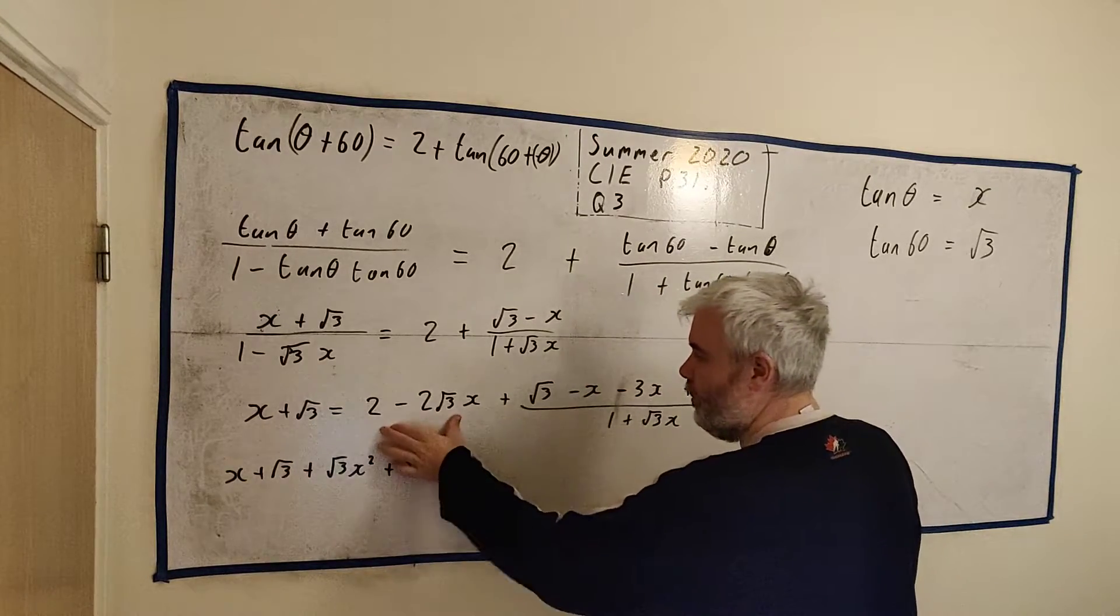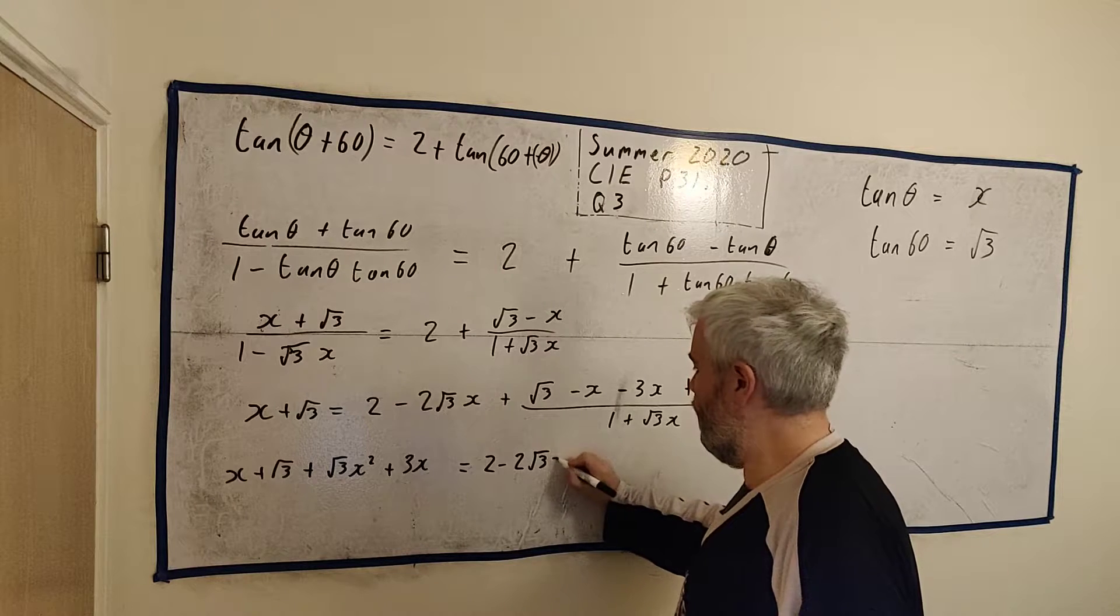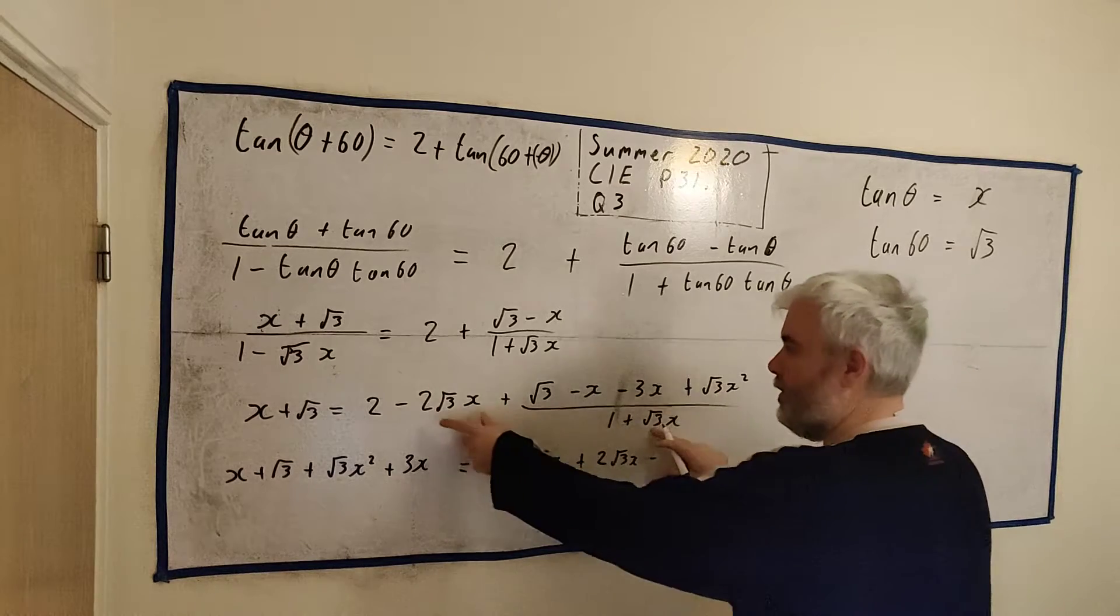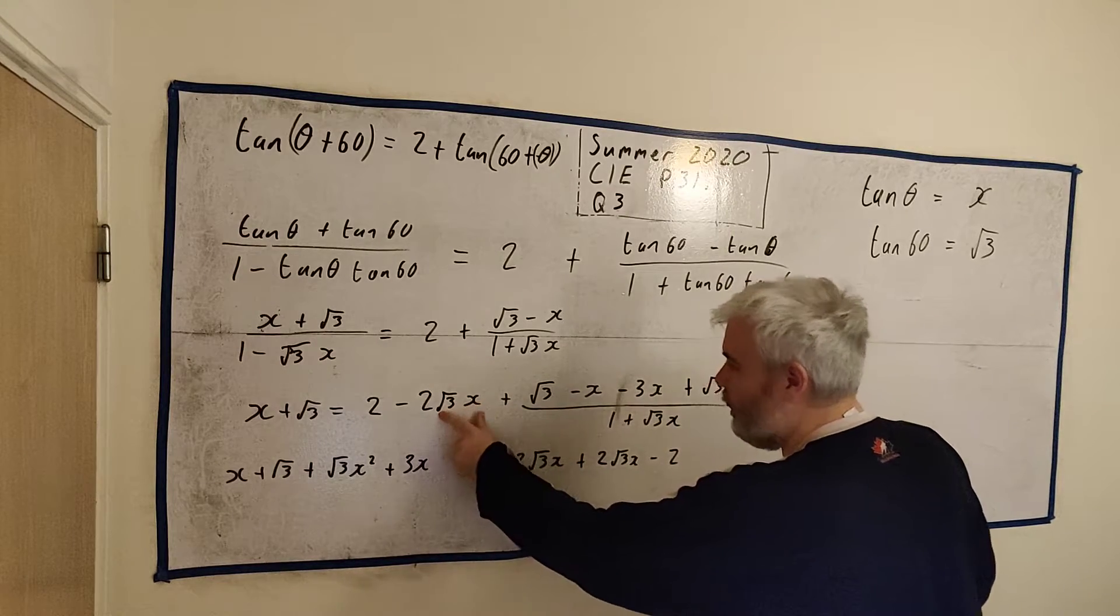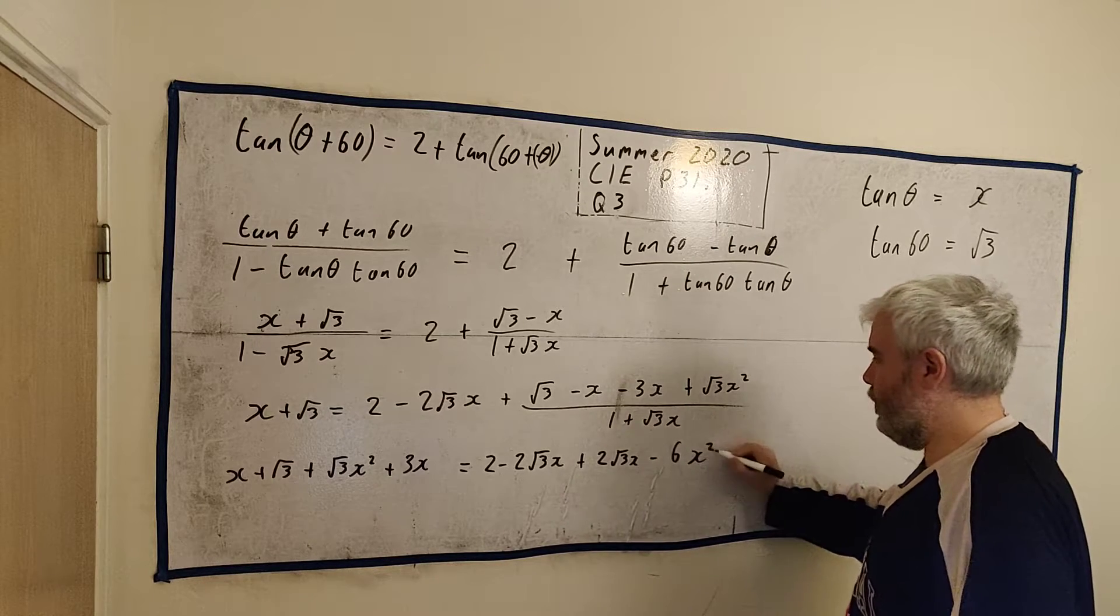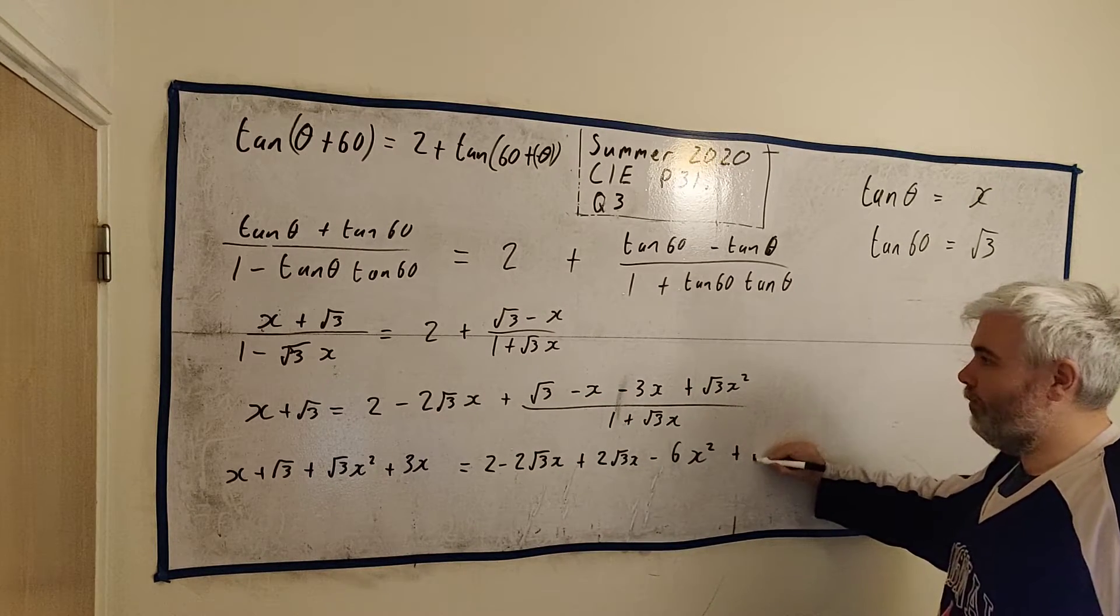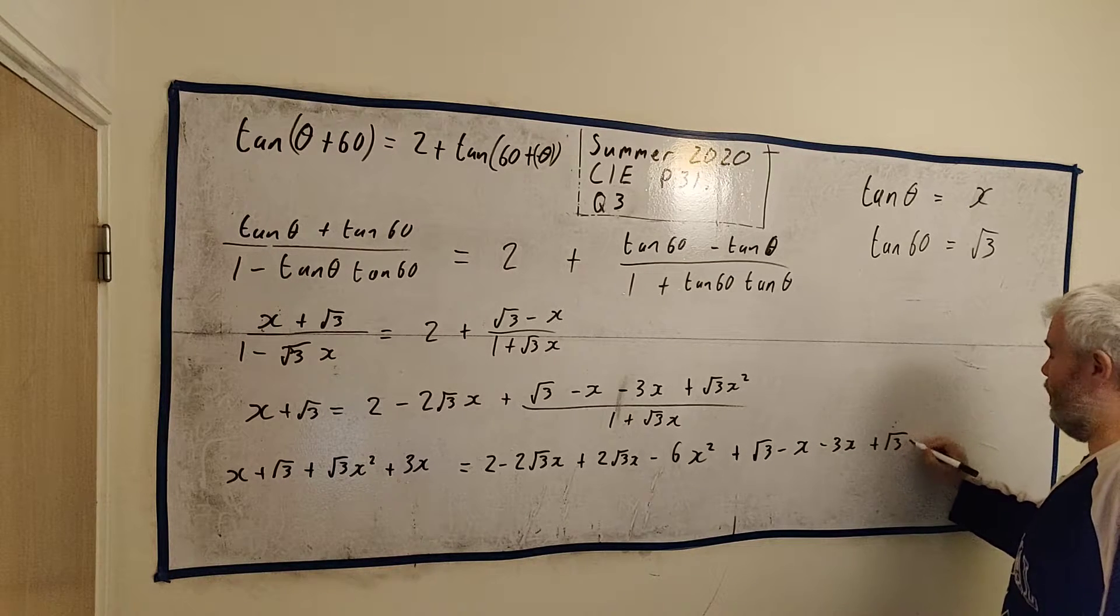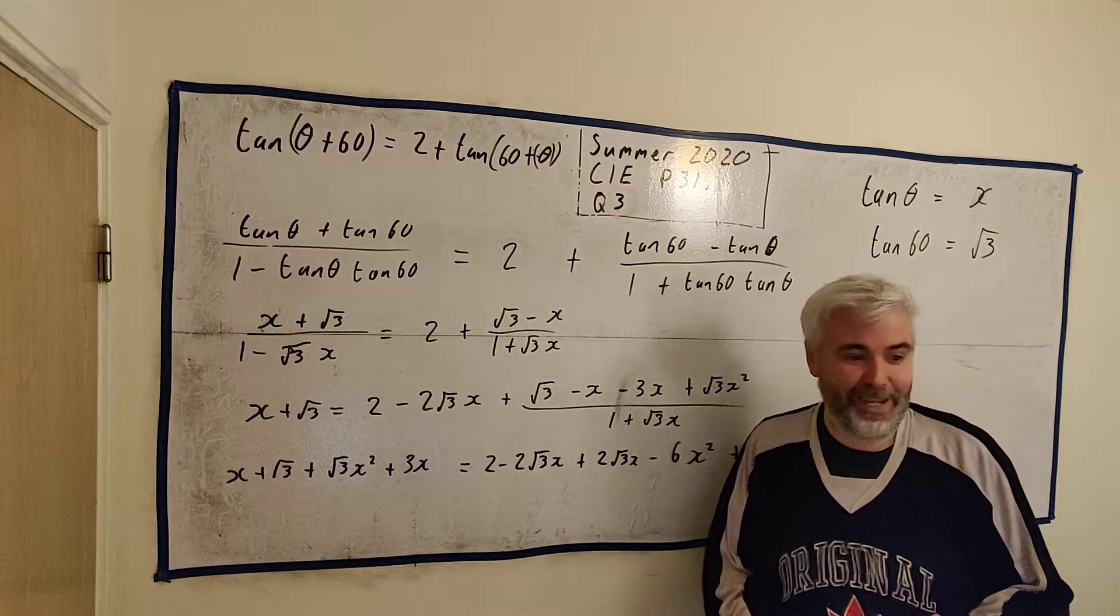Equals, we'll do 1 by these two, we'll do √3X by these two. We will get 2 - 2√3X + 2√3X - 2·3·X². 2 times 3 is 6, and then we still have this set of numbers here, plus √3 - X - 3X + √3X². Okay, now that's a mess, and that's why it's understandable students made mistakes.